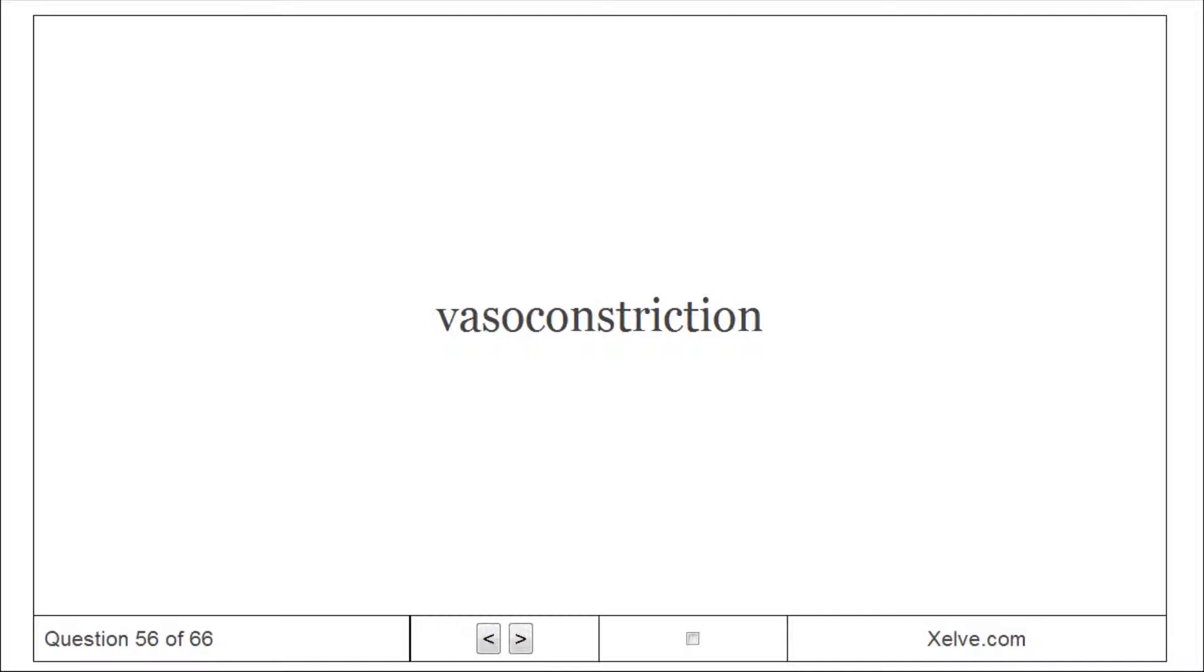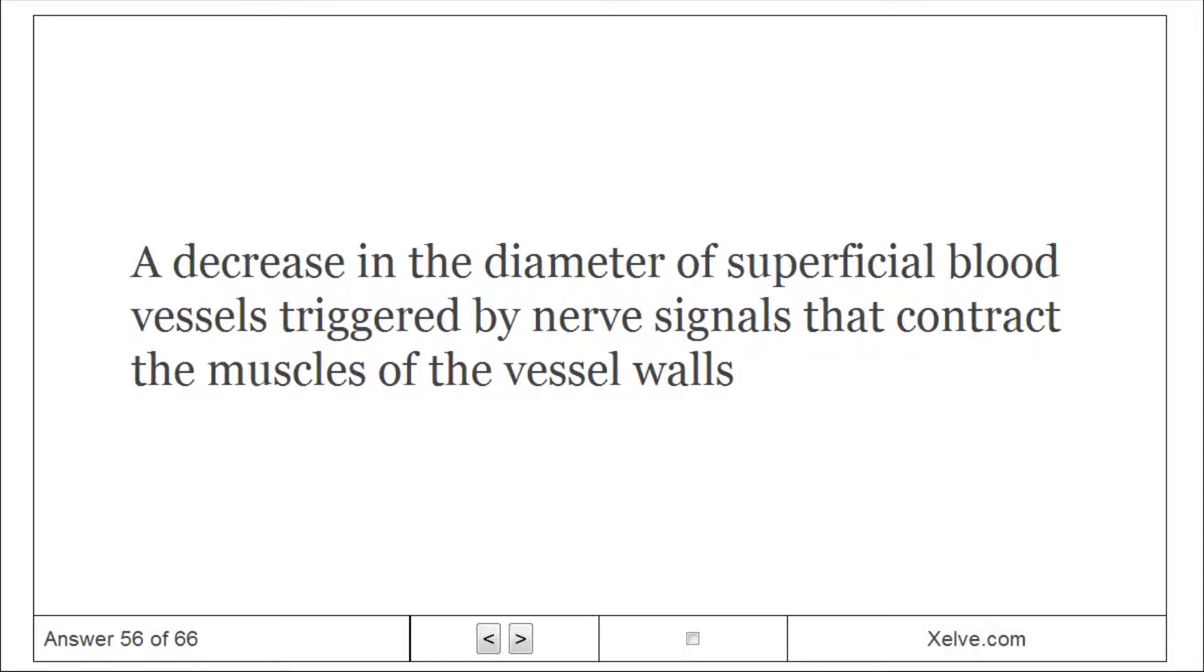Vasoconstriction: A decrease in the diameter of superficial blood vessels triggered by nerve signals that contract the muscles of the vessel walls.